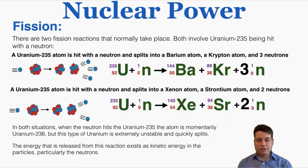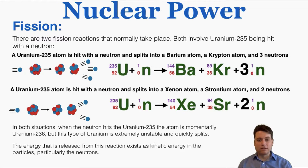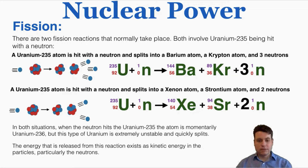There are two types of fission reactions that normally take place in a nuclear reactor, both involving uranium-235 being hit with a neutron. The main takeaway is that when we hit a uranium-235 atom with a neutron, it splits into two smaller atoms plus additional neutrons. The energy created from the conversion of mass into energy exists in the kinetic energy of the neutrons. In both situations, the atom is momentarily uranium-236 — extremely unstable — and quickly splits. The energy released exists as kinetic energy in the particles, particularly the neutrons.